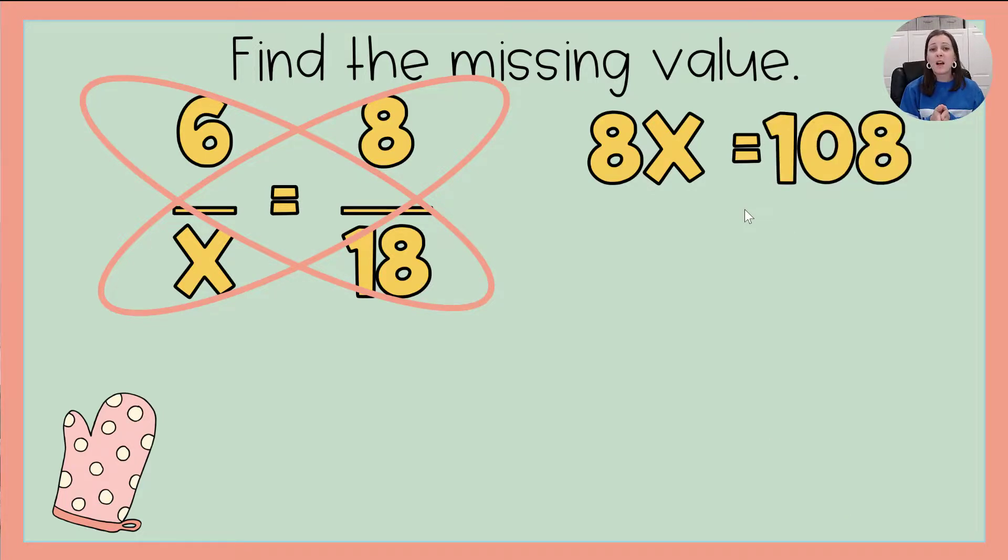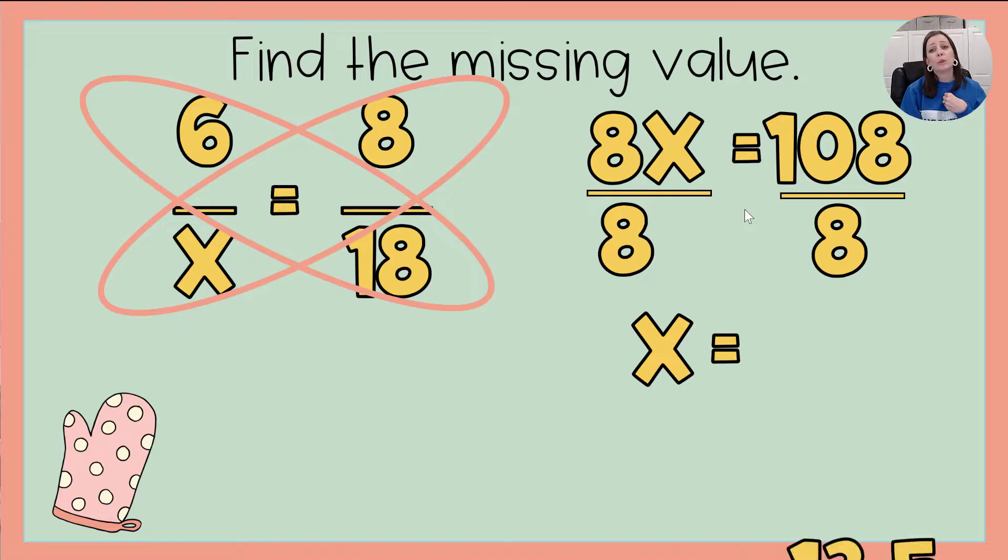Now, I want that x by itself. I'm going to do the opposite, the inverse, to make that happen. 8 times x, the opposite of that, would be to divide. So I'm going to divide that by 8. 8 divided by 8 is just 1, which is what I want. 1x. That tips my scale, and things aren't balanced anymore. So I have to go do the same thing to the other side. And 108 divided by 8 is equal to 13.5. So in this case, x is 13.5, okay?